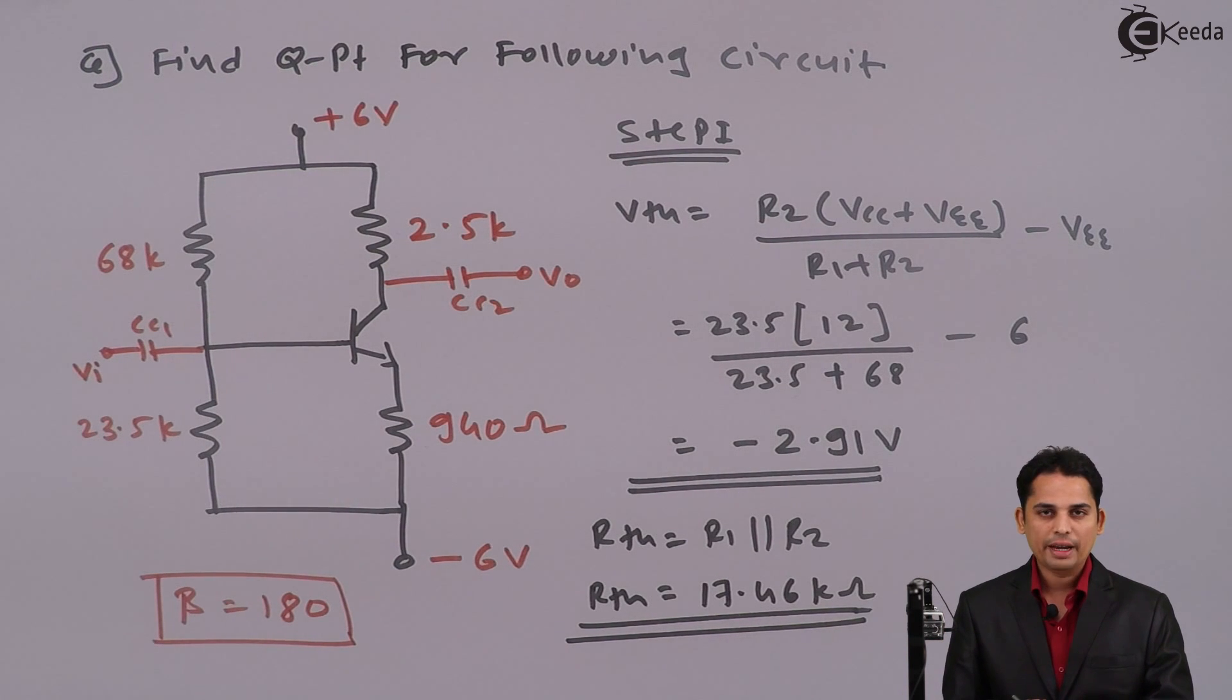So from step 1, we have got value of VTH and RTH. The next step is to redraw the circuit diagram and get value of base current and collector current and VCE.